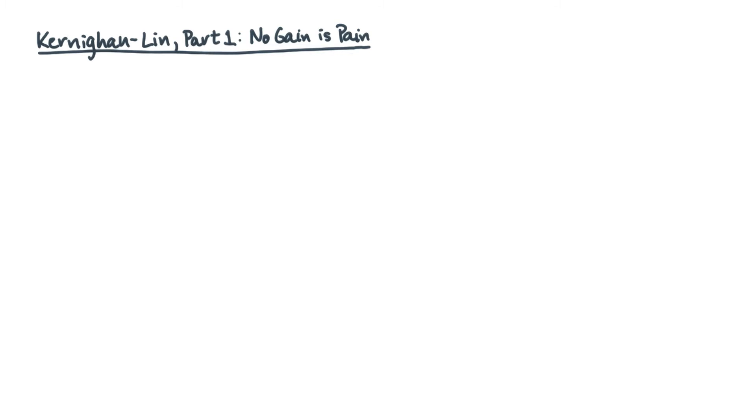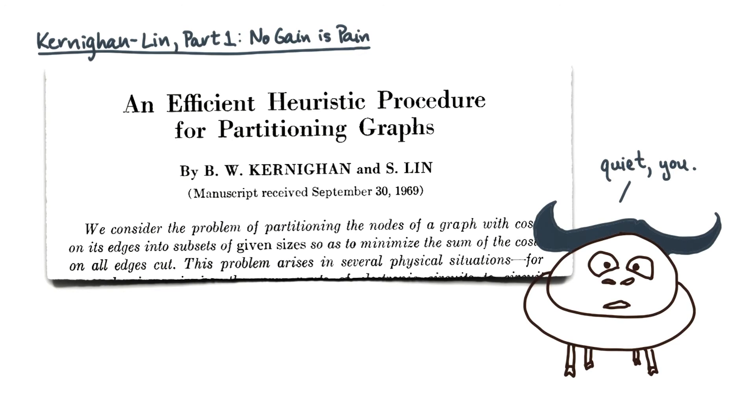The most well-known heuristic for graph partitioning is the Kernighan-Lin algorithm. By the way, the G in Kernighan is silent. That's new as in the wildebeest, not the free software thing, which has a hard G, as in GNU. So it's new, not GNU. Got it?